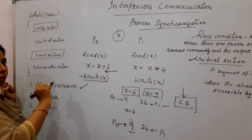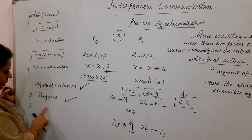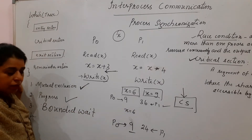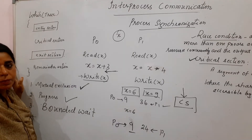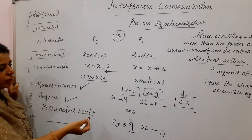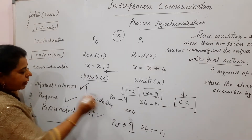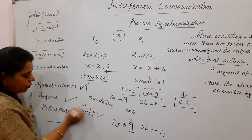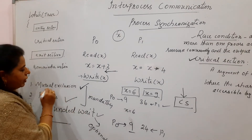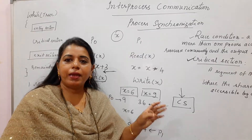At any point of time in the critical section — using CS for critical section — only one process should be there, and that condition is called mutual exclusion. There are several solutions to solve the critical section problem, but every solution must satisfy mutual exclusion, progress, and a third condition called bounded wait. A fourth condition mentioned in Tanenbaum says to ignore the number of CPUs and the speed of the system. For any solution, we check whether these three conditions are satisfied — the first two are mandatory.